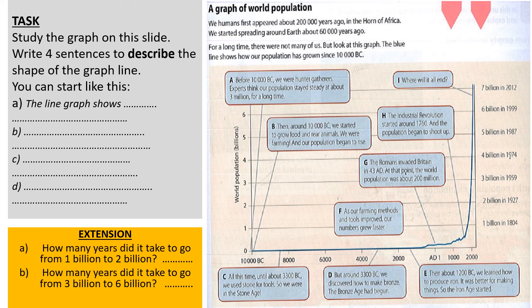Write four sentences about the graph, then for the extension work out how many years it took to go from one billion to two billion — we know it went from 1804 to 1927, so calculate how many years are between those dates. Then work out how many years it took to go from three billion to six billion. Hopefully you'll see that population has started to increase much more rapidly in more recent times.